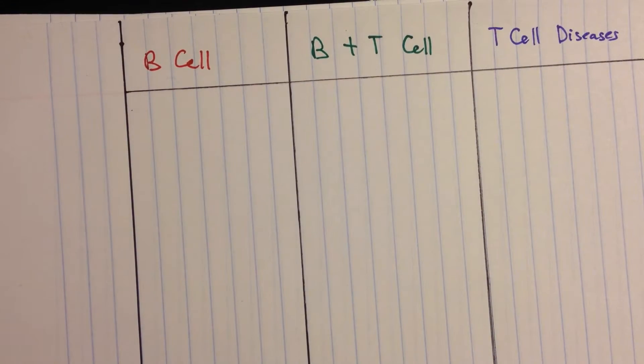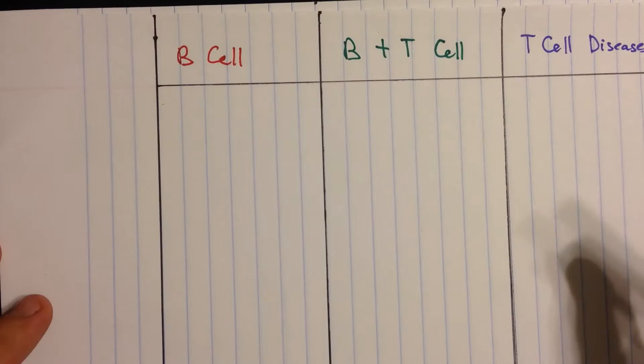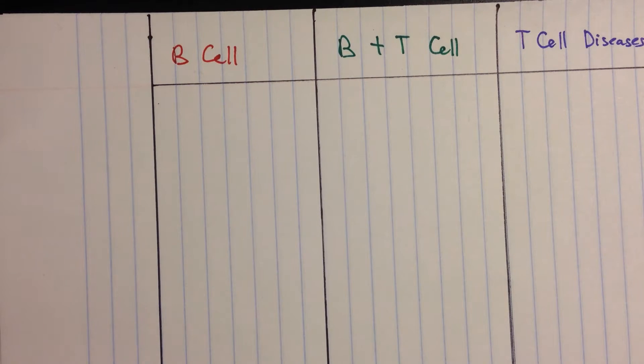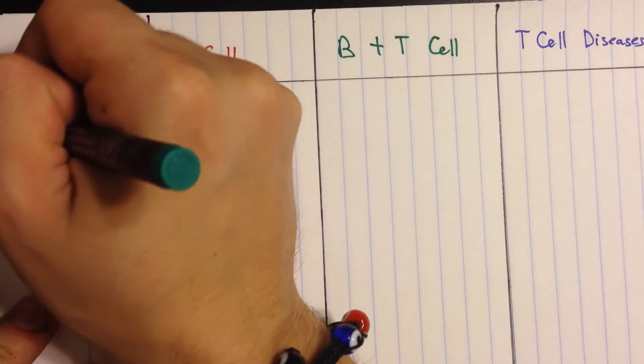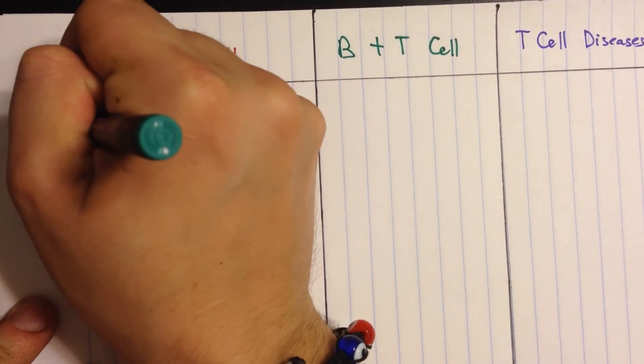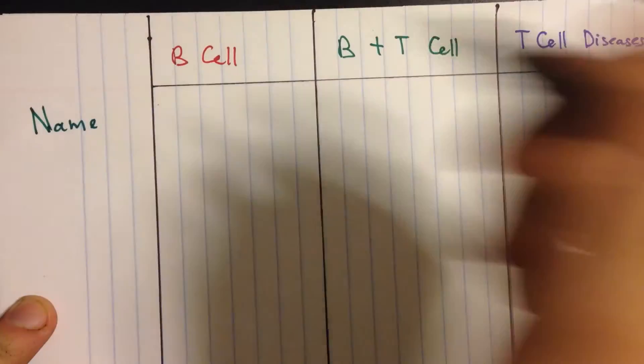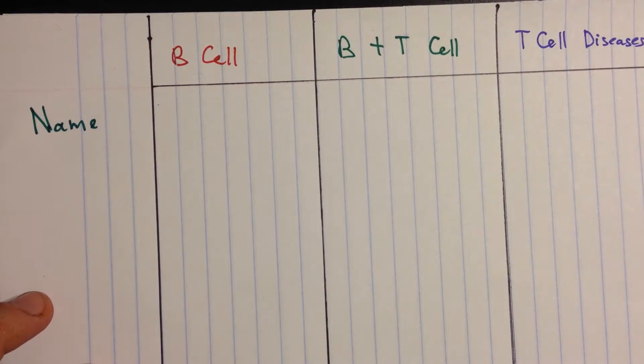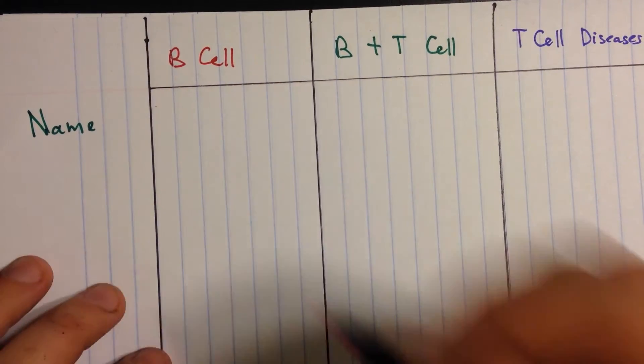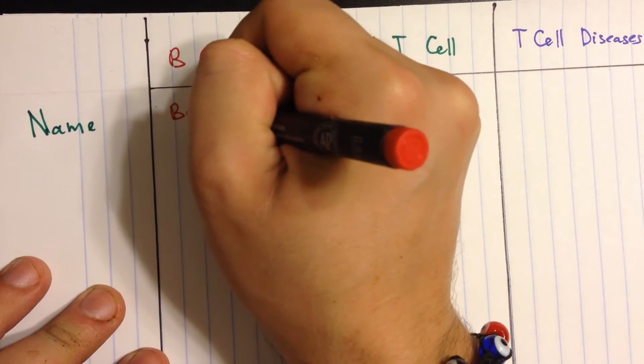Now the way we're going to begin this thing is with a name. We're going to begin by starting with the names of these diseases in these groups. When you're looking at diseases under B cells, you're talking about Bruton's. That's the B cell disease.